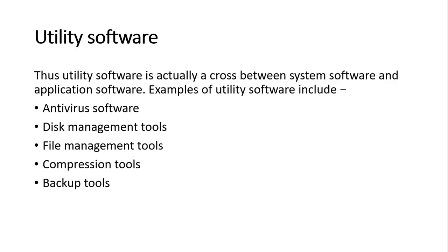Utility software is a cross between system software and application software. Examples of utilities include disk management tools, file management tools, compression tools, and backup tools. All those are specific tools found in the category of utility software.